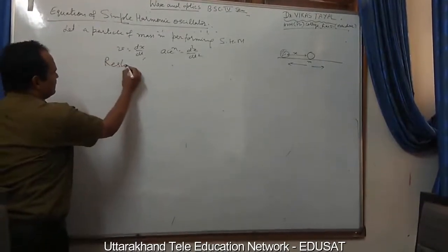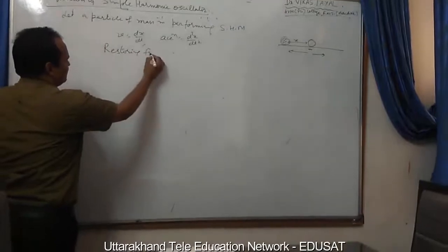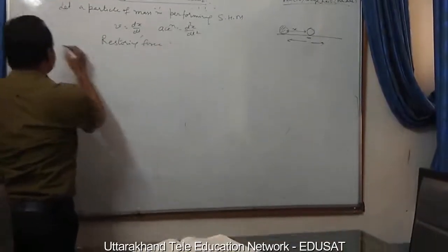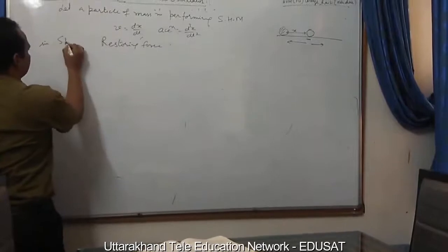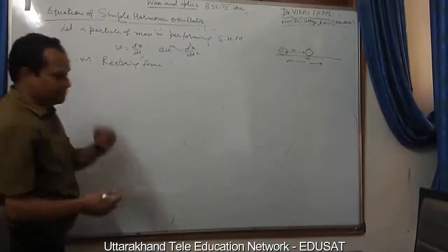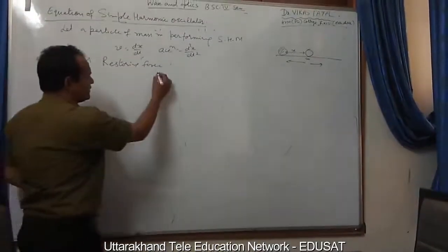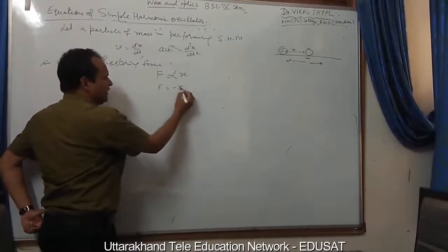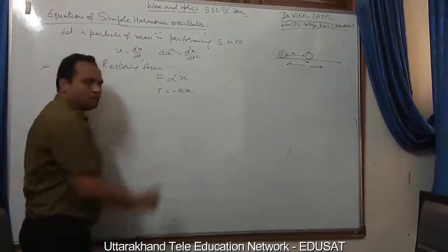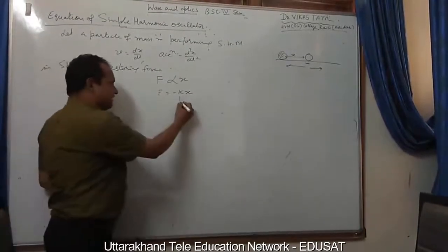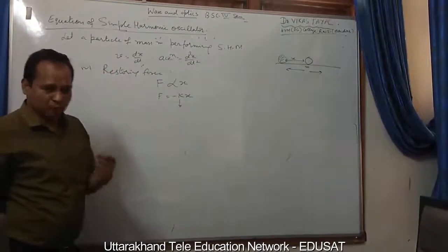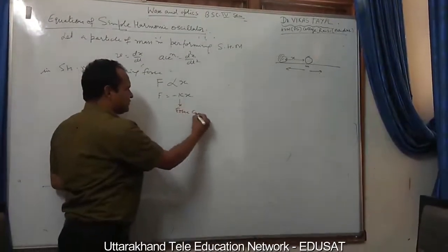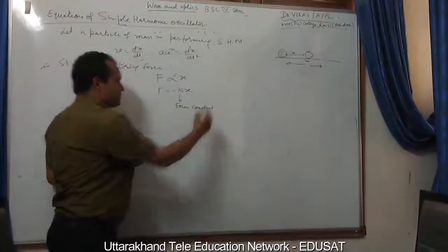Now, restoring force. In SHM, the restoring force F is directly proportional to x, so F is equal to minus kx, where k is a constant of proportionality — we call it the force constant.